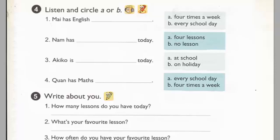Two. How many lessons do you have today, Nam? I have four: Maths, Vietnamese, Music, and PE. How about you? How many lessons do you have today? Oh, it's a holiday in Japan today. Great. It's nice to have holidays.